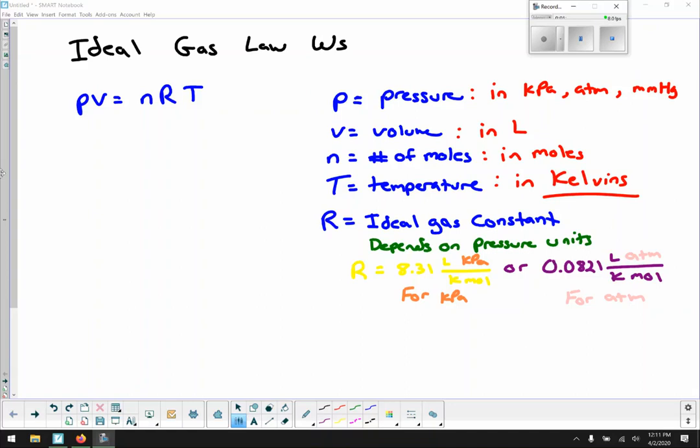So just a reminder, P is pressure. That's measured in kilopascals or atmospheres or millimeters of mercury. Because of the differing R values, I have limited it to kilopascals and atmospheres here. So you aren't going to see millimeters of mercury in Ideal Gas Law problems. V is volume. That's measured in liters. So if I did give you something in milliliters, you would have to convert. So it has to be in liters. N is number of moles, which shockingly is measured in moles. T is temperature in kelvins.